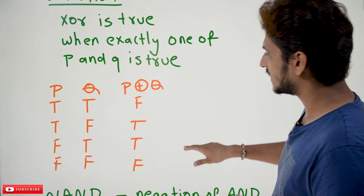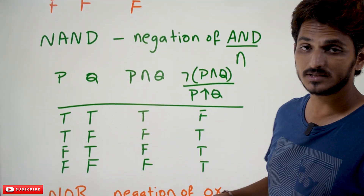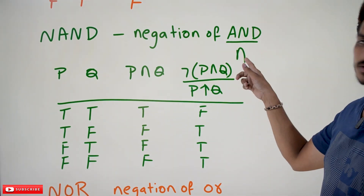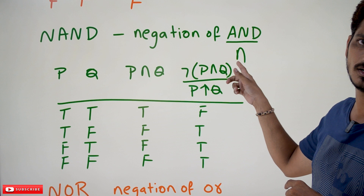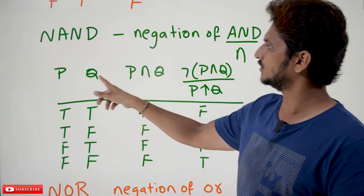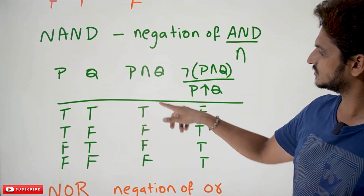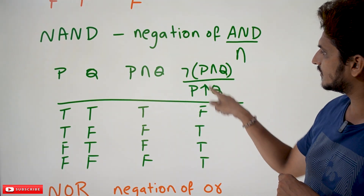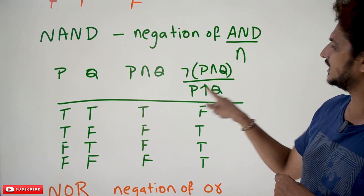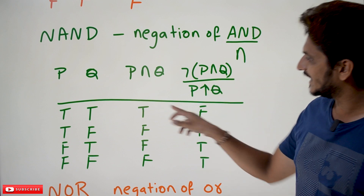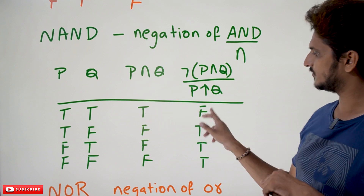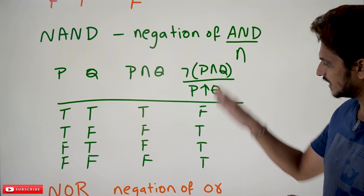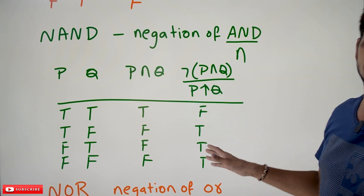The next connective is NAND. NAND means negation of AND, where AND uses the conjunction symbol. So P NAND Q is the negation of P conjunction Q. Since P conjunction Q gives true, false, false, false — negating it gives false, true, true, true. This is the truth table for the NAND connective.